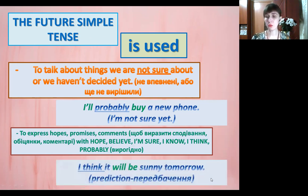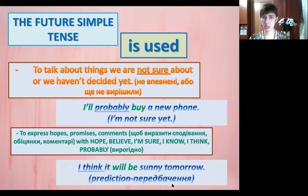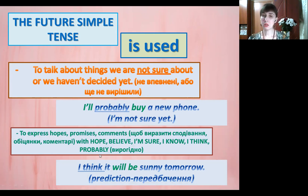For example: I think it will be sunny tomorrow – я думаю, буде сонячно завтра. Prediction – передбачення. Ми робимо передбачення через фразу I think – я думаю. I believe, I think it will be sunny tomorrow. Тобто, якщо я не впевнений або ще не вирішив щодо моїх дій в майбутньому, або я сподіваюся, вірю, впевнений, думаю, то потрібно використовувати will future.